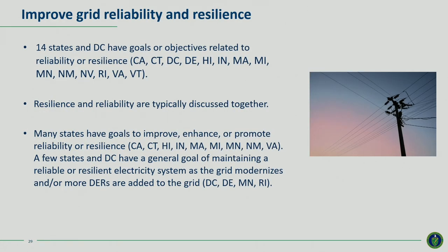The first objective we saw most commonly was grid reliability and resilience. Of the 20 states and D.C. that we looked at, about 14 identified reliability or resilience as one of their goals. Most focused on improving, enhancing, or promoting reliability or resilience, while a few had a general goal of maintaining a reliable or resilient electric system as the grid modernizes and DERs are added.